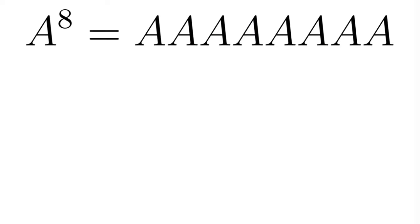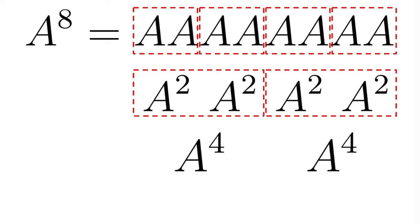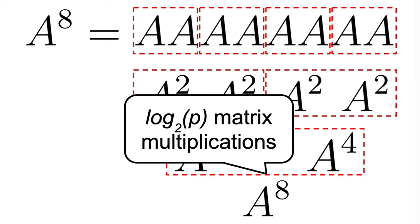What you can do instead, is to group those matrices together, and let's say that we want to compute A to the power of 8. Firstly, we compute A squared, so that's one matrix multiplication. Then, using A squared, we can compute A to the power of 4. And now that we have A to the power of 4, we can compute A to the power of 8, by taking the square of A to the power of 4. Well, with this simple trick, we reduce the 8 matrix multiplications to 3, or log 2 of p in more general terms, which is kind of good.